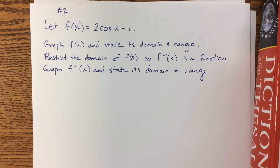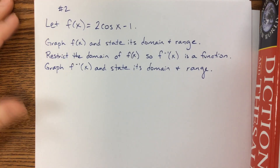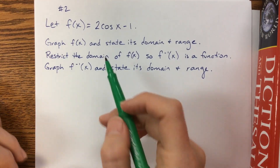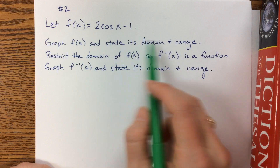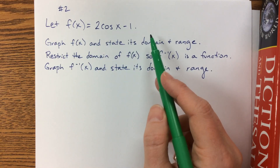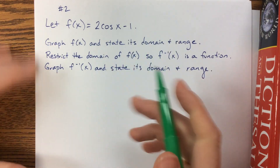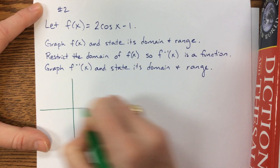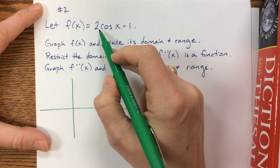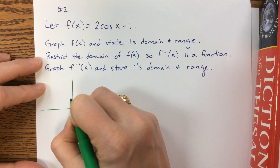This is the second of three videos on inverse trig functions and their transformations. They're giving us a function and asking us to graph it, state its domain and range, and then we're going to talk about how we can find its inverse. So to begin with, this is cosine — it's been stretched vertically by a factor of 2 and then shifted down 1.